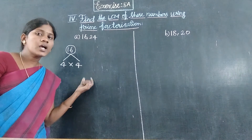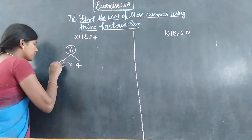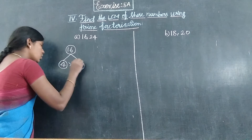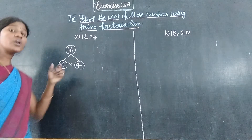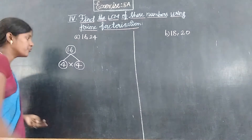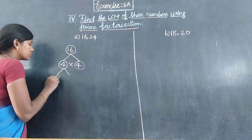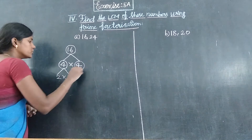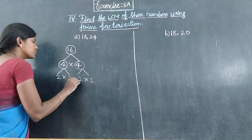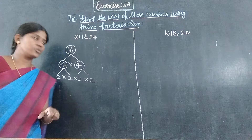Four is a composite number, so we circle it and break it further. This four is also a composite number. Two twos are four, so each 4 breaks into 2 times 2. Two into two — so 16 = 2 × 2 × 2 × 2.